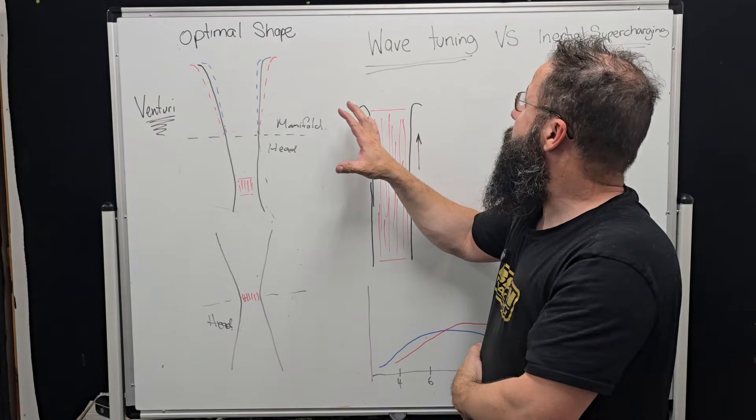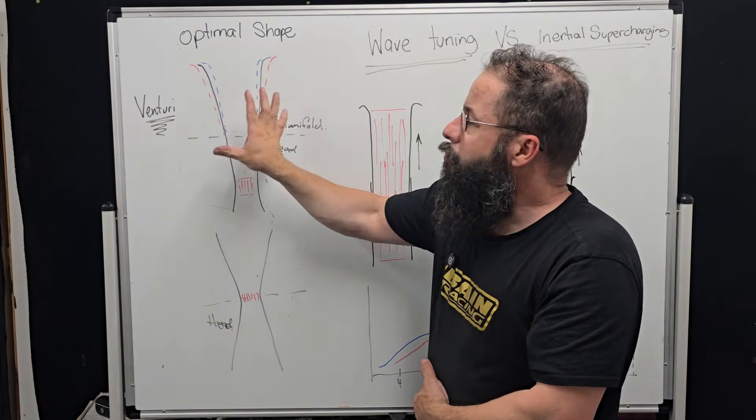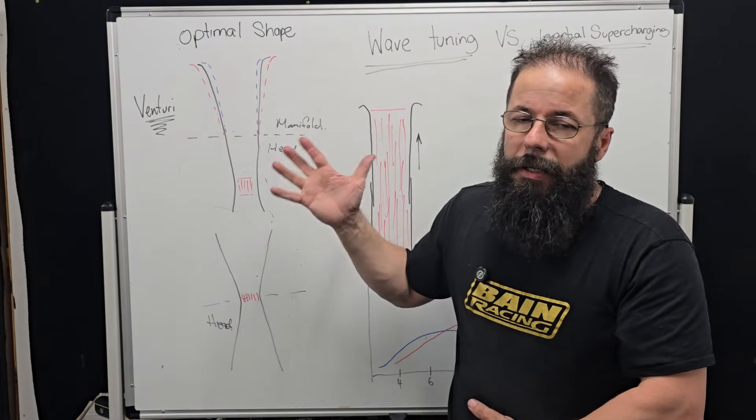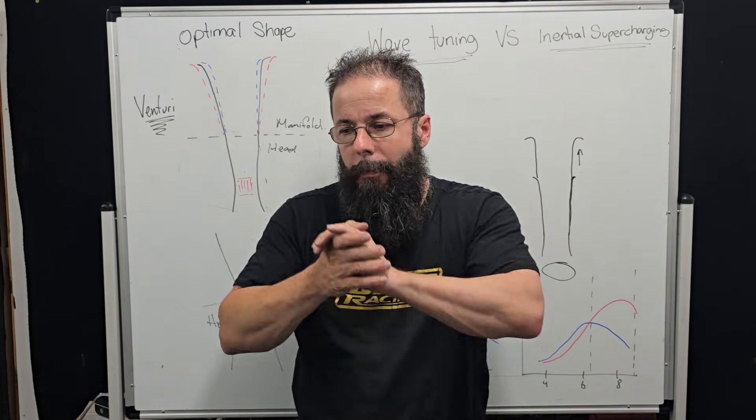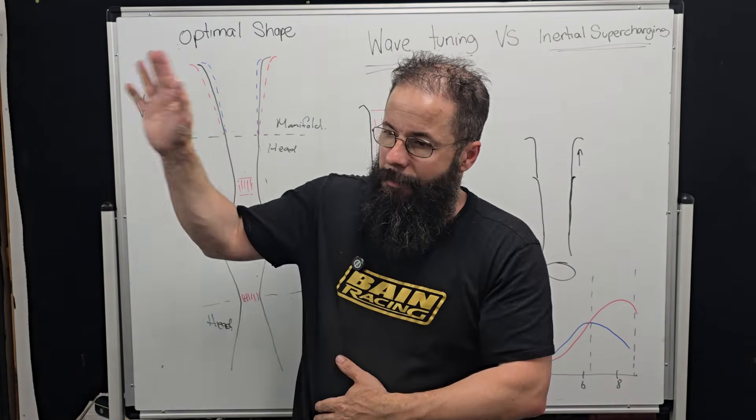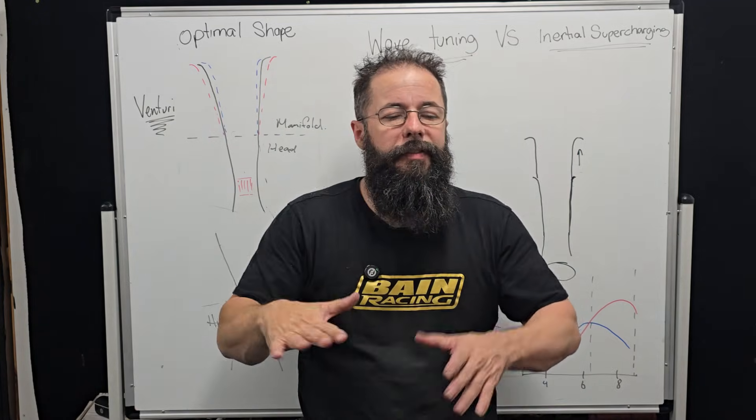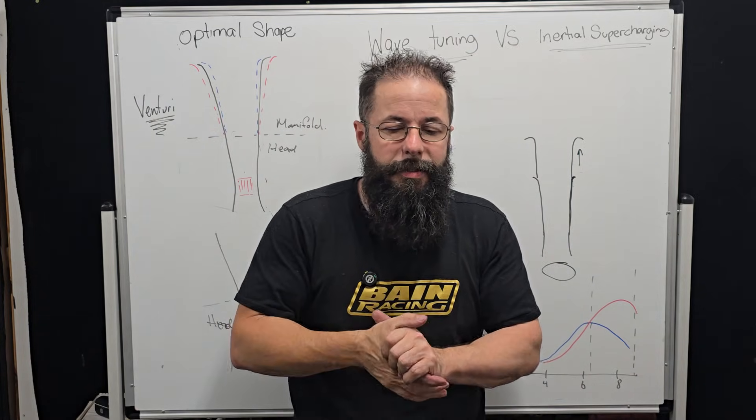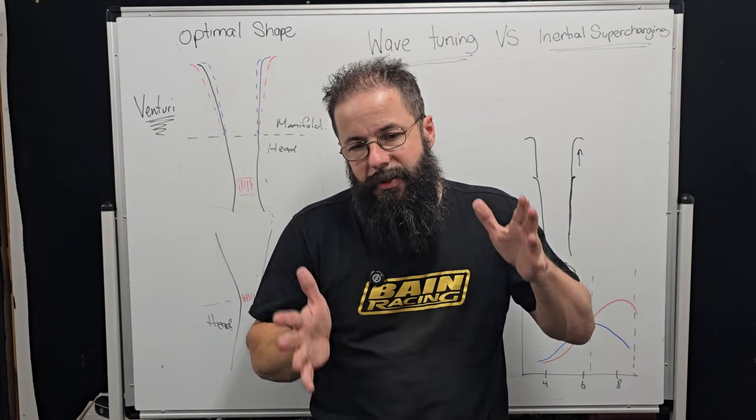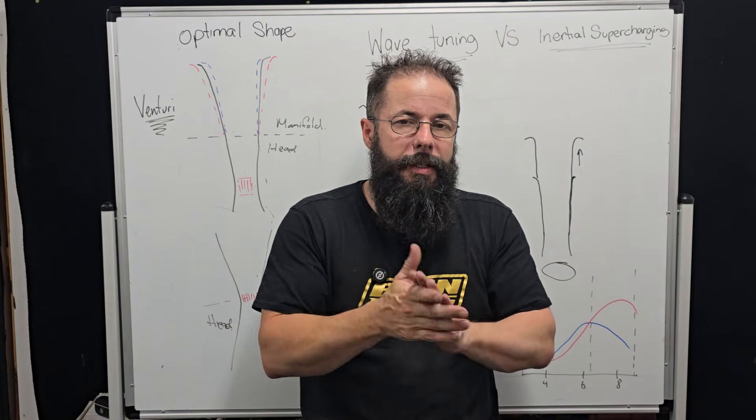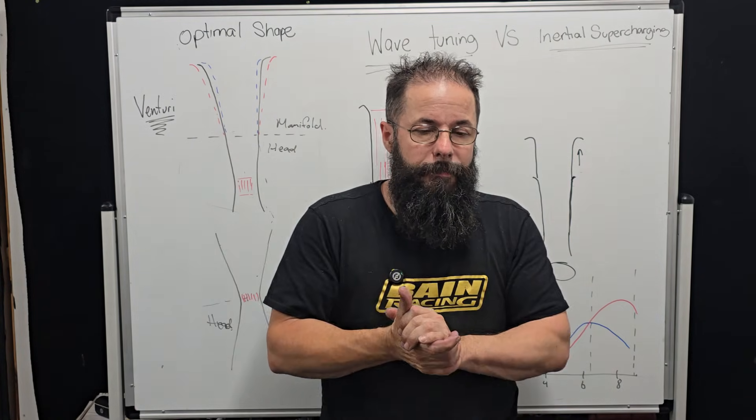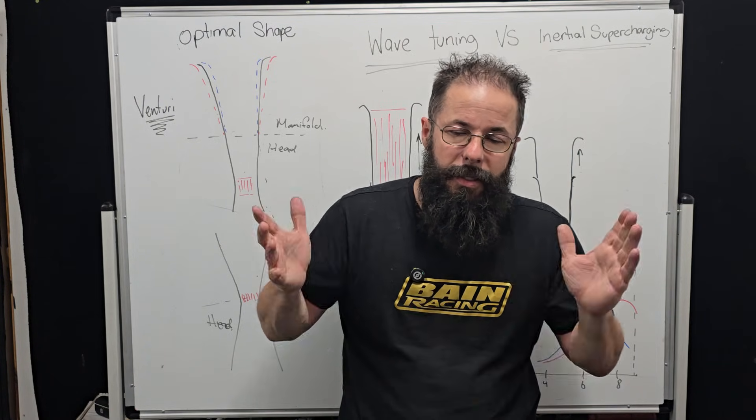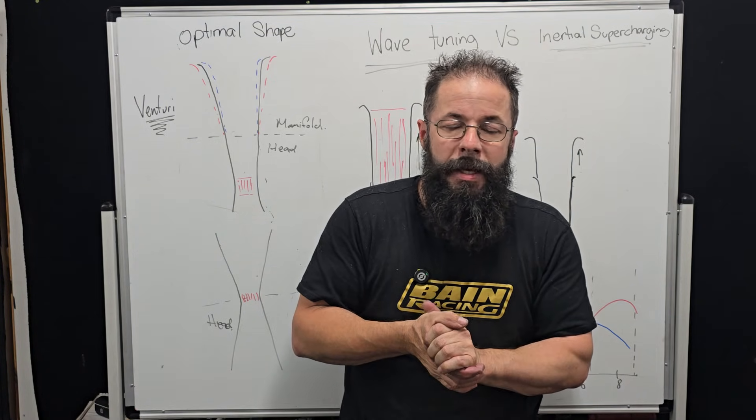So yeah, guys, basically the right induction will generally win everywhere. And again, we see this in motorsport. This is why your pro stock, super stock or the top NA cars, Dave and his Honda stuff. They're all using tapered runners, fixed runner length. And just optimizing that area under the curve where we need it. And yeah, that's probably the most important thing. Anyway, guys, in our next video, we're going to talk about valve seats.